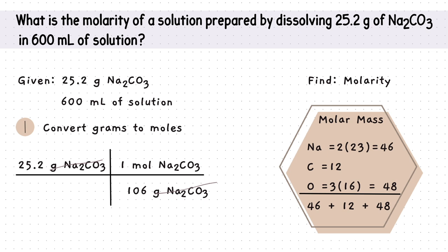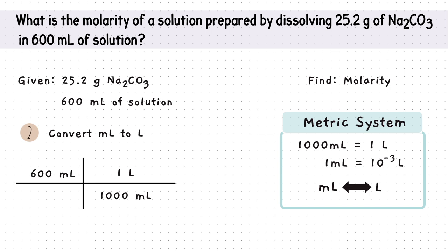Since this isn't the last step, I will hold off on rounding. Moving on to step two. We'll use either one of these conversion factors from the metric system. I'll use this one. Place the same unit of milliliters across from each other so they can cancel out. And after dividing, we get 0.6 liters.